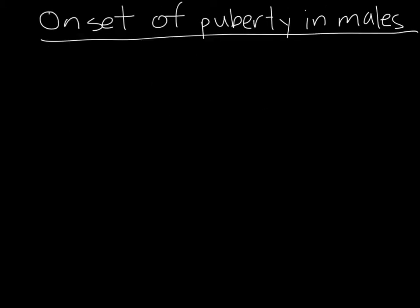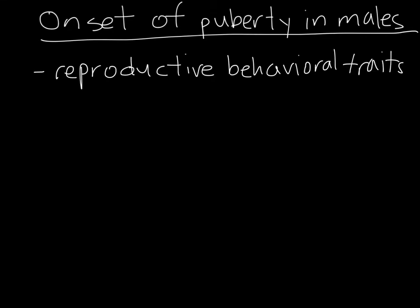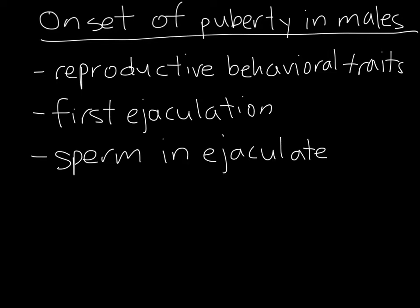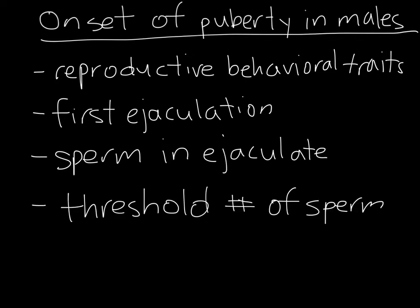In males, puberty can be defined as the age when they begin to exhibit reproductive behavioral traits, the age at first ejaculation, the age when sperm first appear in the ejaculate, or the age when the ejaculate contains the threshold number of sperm. The first definition is easy to observe, as mounting and erection are very visible signs of reproductive behavior. However, these animals still may not have the ability to fertilize a female. The second and third definitions demonstrate more maturity than the first definition, but there still may not be enough sperm to fertilize, meaning that the animal is not quite reproductively competent yet. Thus, the fourth definition is usually the best practical definition of puberty in males.